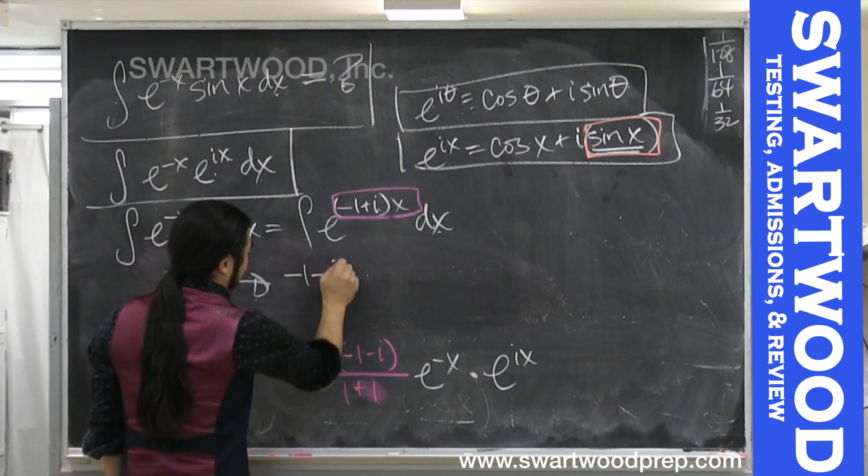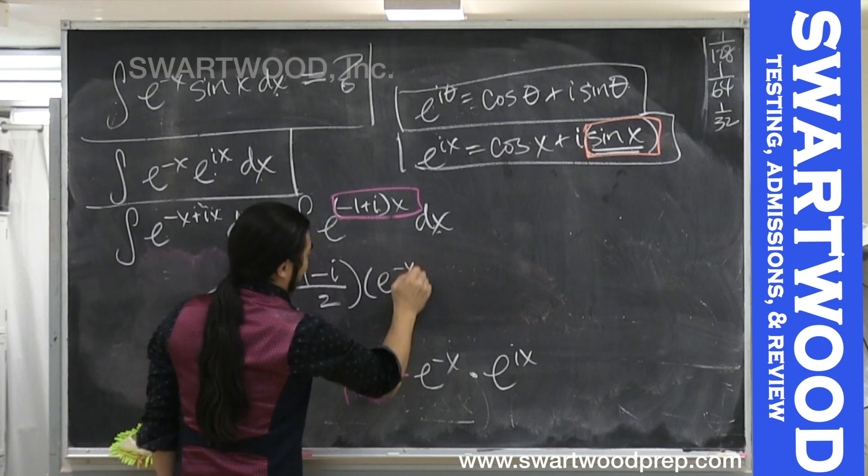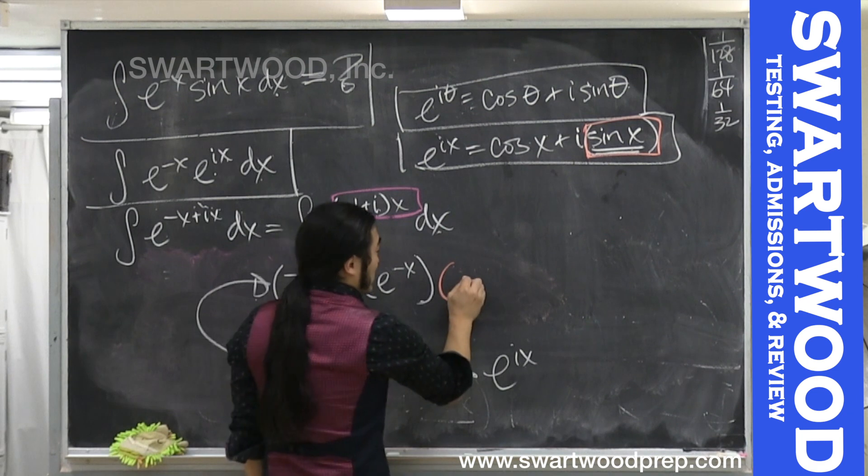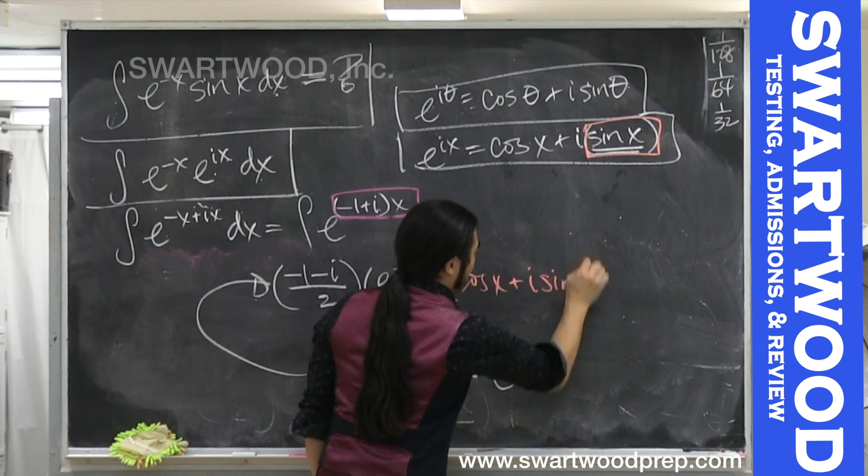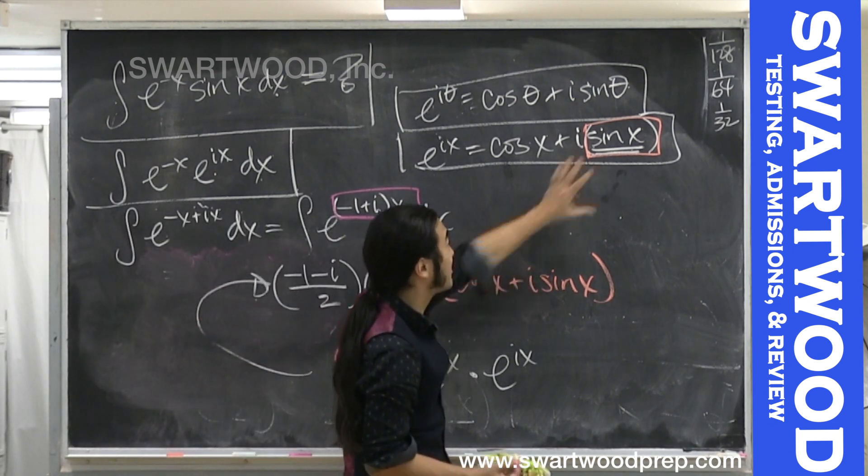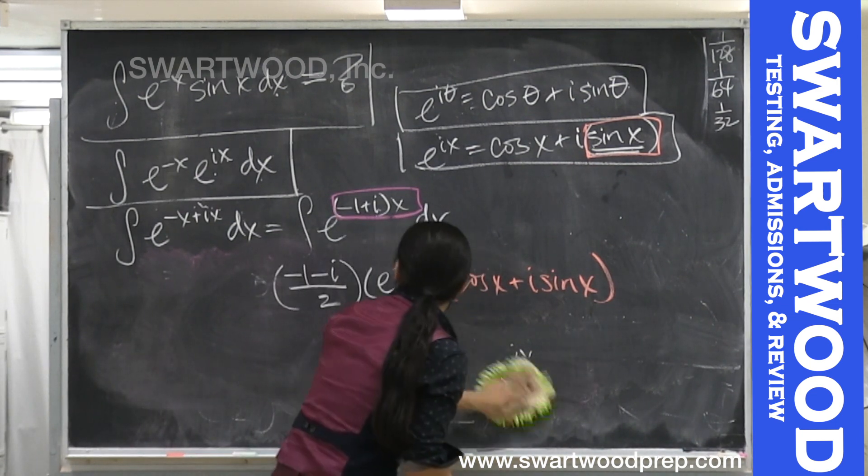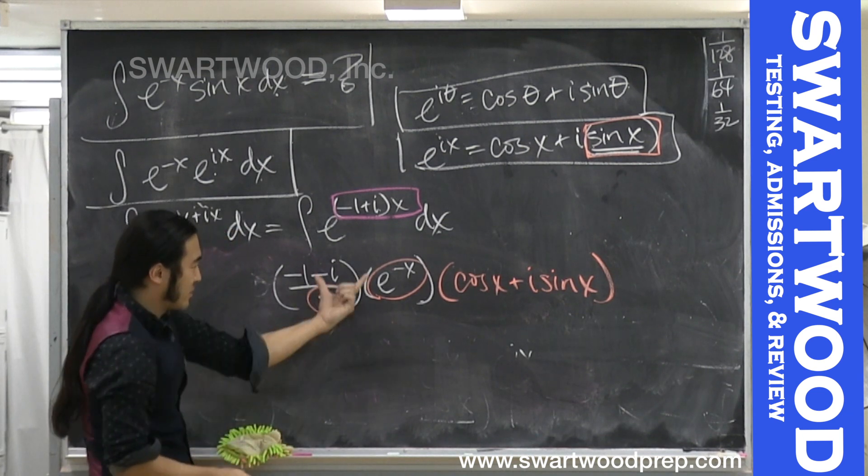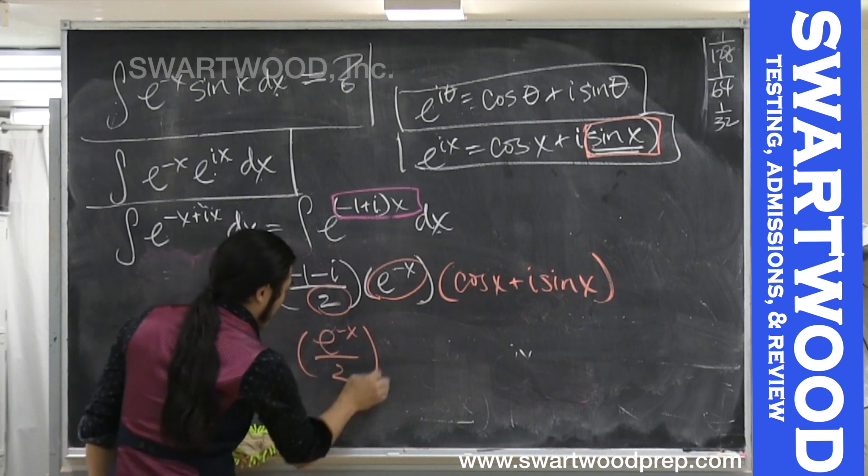So now we're going to get negative one, negative i over two times e to negative x. Times this guy. But this guy we know is what? Cosine of x plus i sine of x. So what we want to do in theory is multiply everything out and then look for the guys that make up the imaginary component. But we can take a shortcut here. I think we want to go ahead and bring out this guy and this guy, because they're just going to be a factor for everybody. So e to negative x over two.